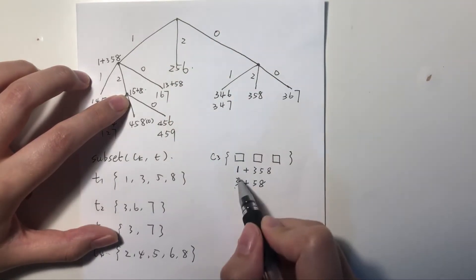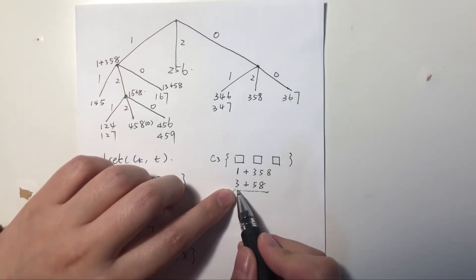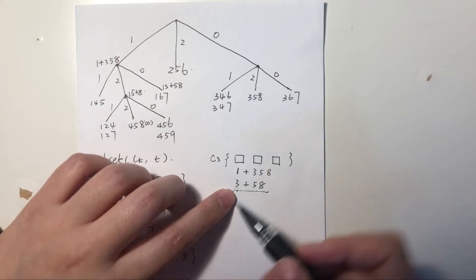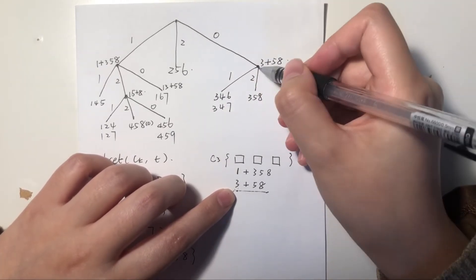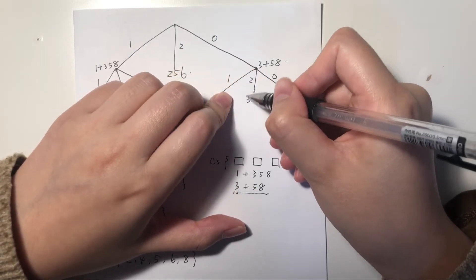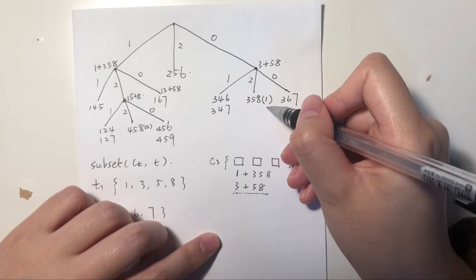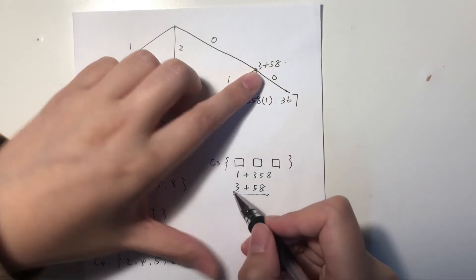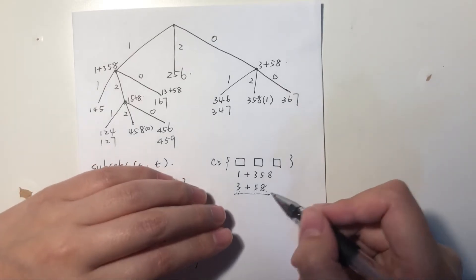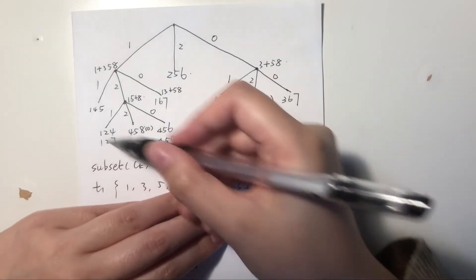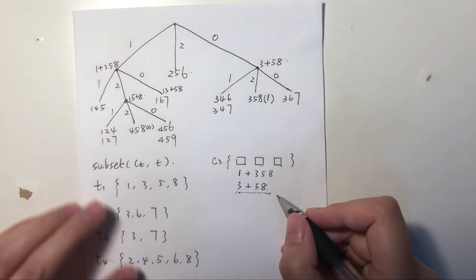That covers the case where the first element is 1. For the case where the first element is 3, we hash 3: 3 mod 3 = 0, so it goes to this branch. If writing code you hash 5 again to reach a leaf and check. For a paper exercise, you can just check if {3,5,8} is in this hash tree — and here it is. So it contains a candidate and it occurs once. That's the result for the first transaction.